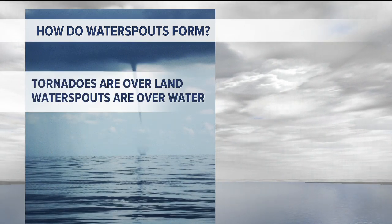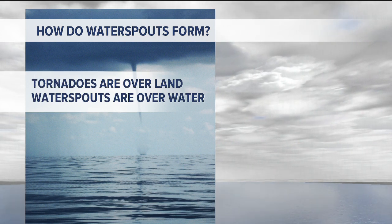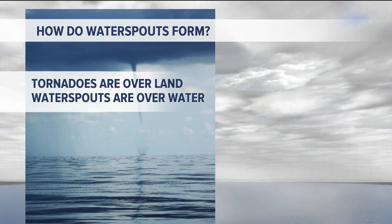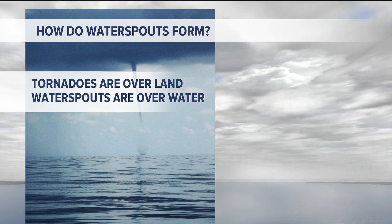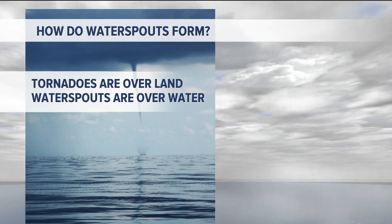Typically, water spouts are pretty weak. They're fairly short-lived. And the biggest difference between a water spout and a tornado is that water spouts are over water, tornadoes are over land.